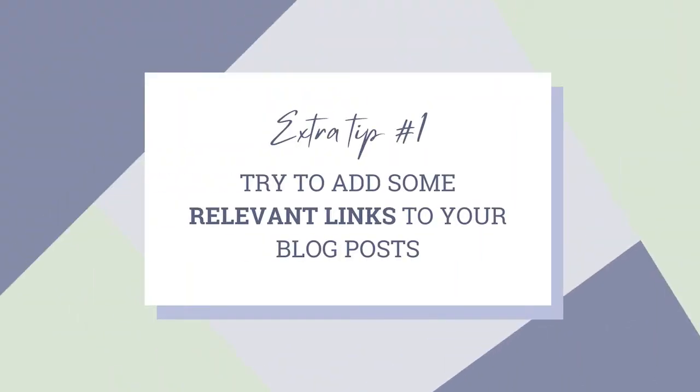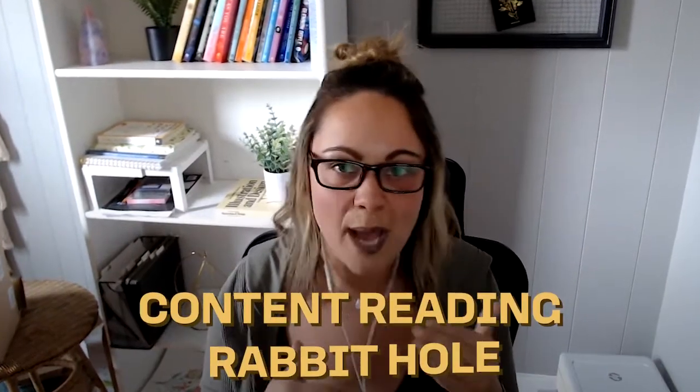My last two tips for blog post SEO optimization: number one, try to add some relevant internal links to your blog posts. This means linking your blog posts to each other. For example, the blog post I just screen-shared about speeding up your Squarespace website also links to a different blog post I created about SEO tips specifically for Squarespace websites. This gives the user extra content to read and increases the time they spend on your website. Aim to link to at least two to three relevant blog posts per post, and when you create a new post, go back to old posts and add links to the new one.